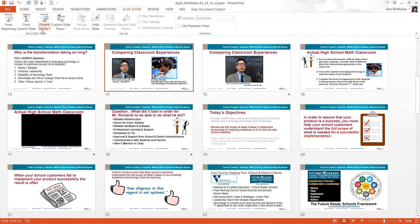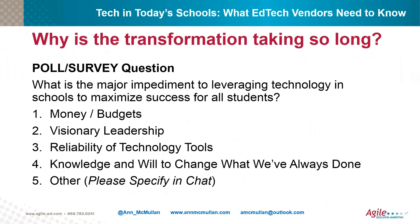Our overwhelming response at 45% is knowledge and will to change what we've always done. We had 13% at visionary leadership, 18% at money and budget, 5% at the reliability of technology tools, and about 18% choosing other — many saying it's both money and budget and the knowledge and will to change. Also mentioned: ability to understand the impact on various visions, and systematic controls and boundaries. It substantiates the notion that money doesn't solve everything, and that sometimes the will gets in the way of moving forward.